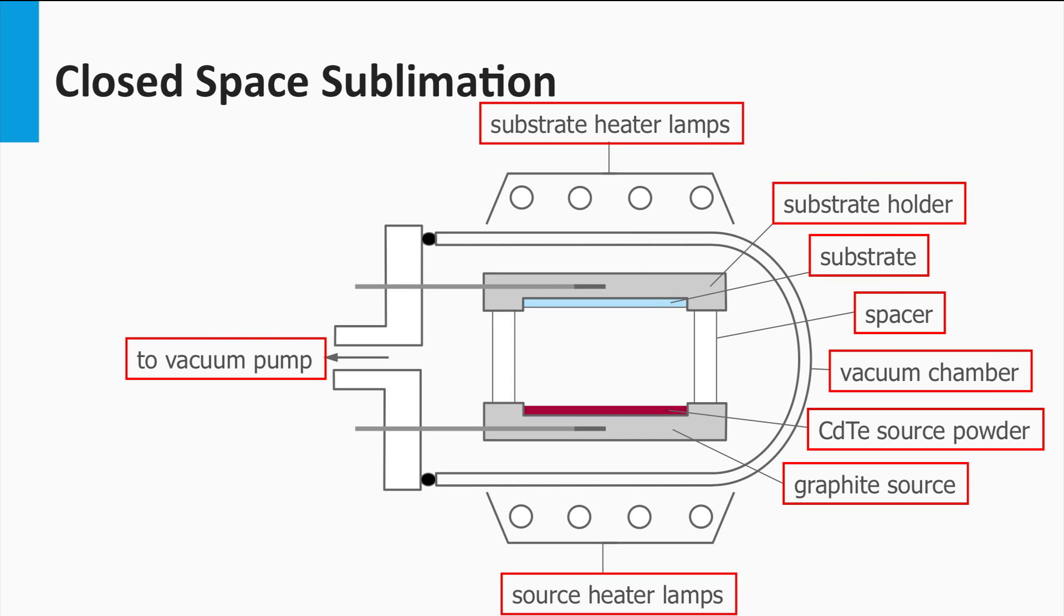The cadmium sulfide-cadmium telluride layers are in general processed using the closed space sublimation method. In this method, the source and the substrate are placed at a short distance from each other, like a few millimeters up to centimeters under vacuum conditions. Both the source and the substrate are heated.